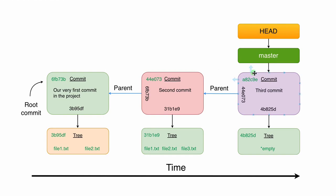The current picture of our project looks like this. There are three commits and three trees, and under the trees there are three blobs. There is a master branch, the current default branch that points to the last third commit. There is also HEAD, and HEAD points to the master branch. When the master branch moves along with commits, HEAD moves with the master branch as well.